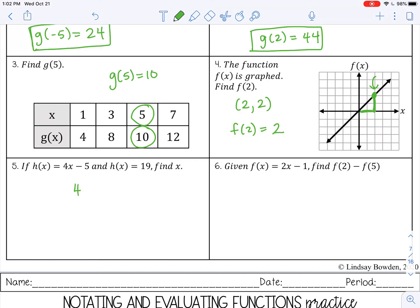We are given two values for h of x. We know that this expression is h of x, and we know that it also equals 19. So I can set those two values equal to each other and solve for x. I can add 5 to both sides, and then divide by 4. So x is 6.